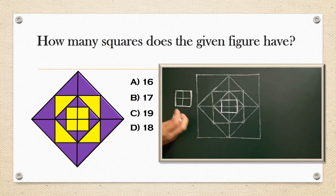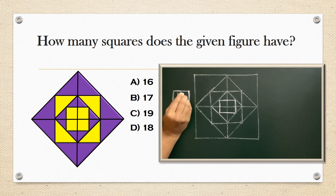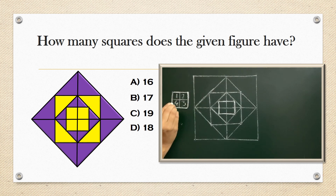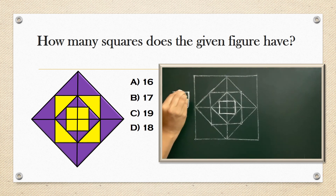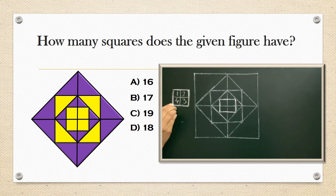Number of squares in this figure: 1, 2, 3, 4, then these 4 together form the fifth bigger square. So 5 squares in this figure.